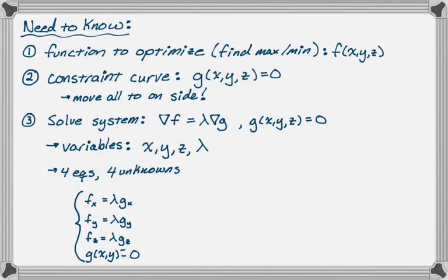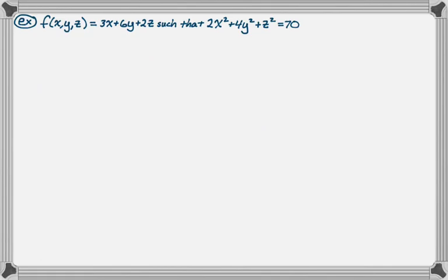Alright, let's do the problem. So here it is. We need to figure out what g(x,y,z) is. We're going to take 70 and move it over. So g(x,y,z) is 2x squared plus 4y squared plus z squared minus 70, and that must equal zero because we moved it over. That's our constraint curve.